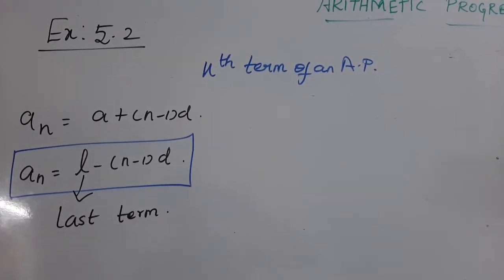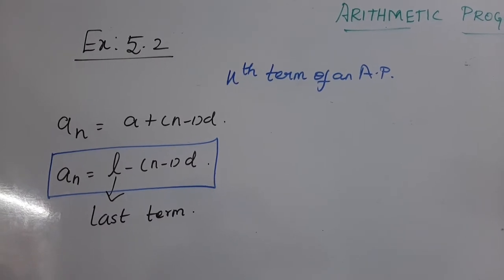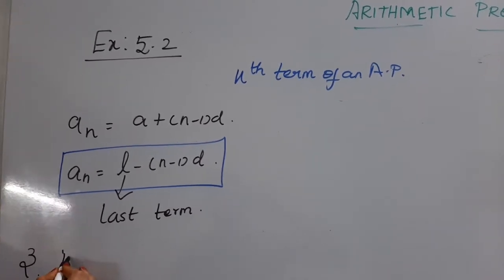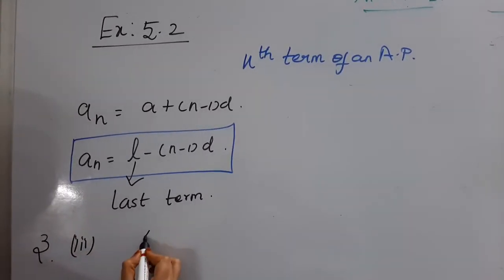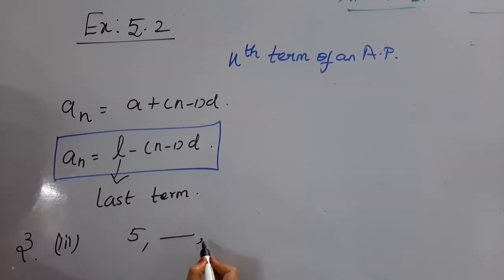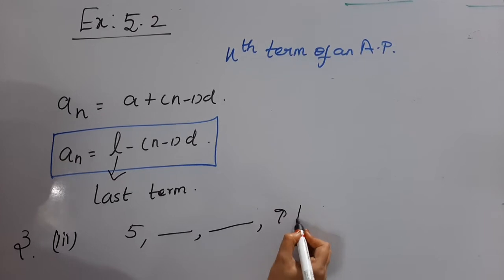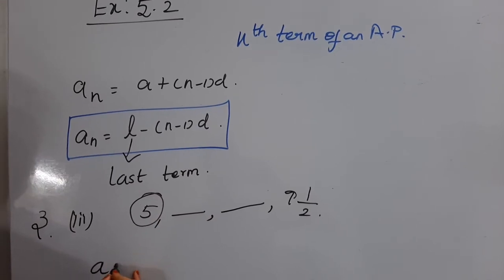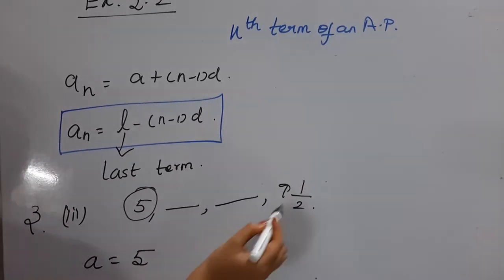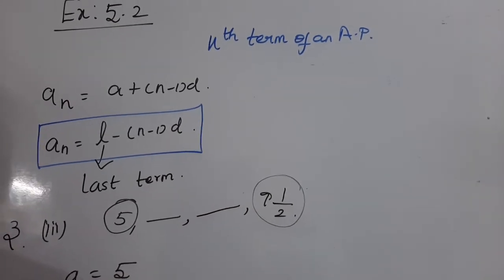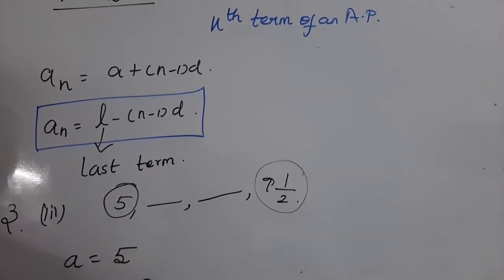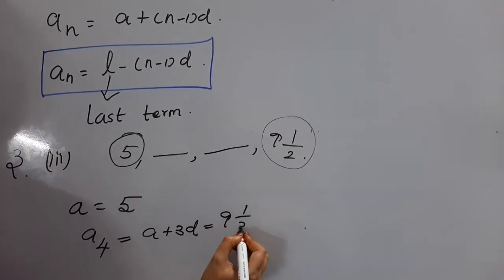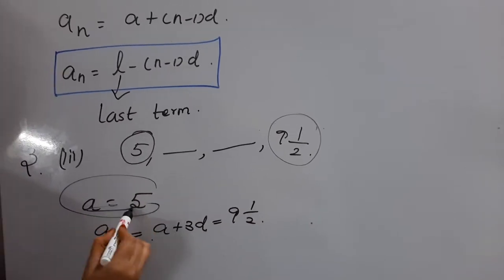Now check question number 3 in exercise 5.2. In question 3, they ask us to find out the missing terms. The first term is given, the second and third terms are missing, and the fourth term is given. We need to find the missing two terms. A is given as 5. The fourth term, A4, has the general format A + 3D, and its value given in the question is 9½.